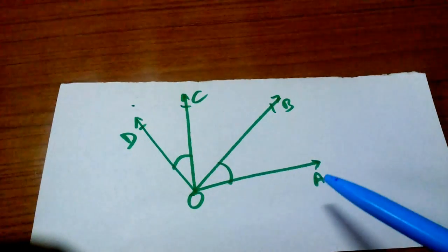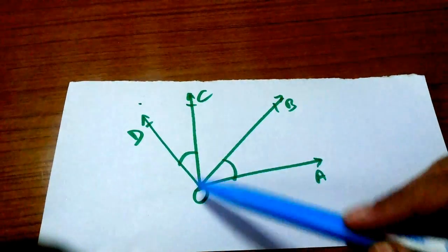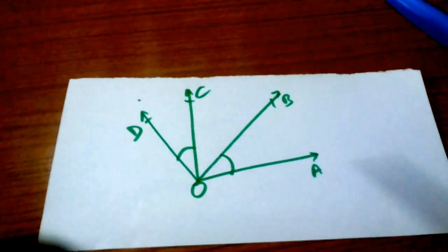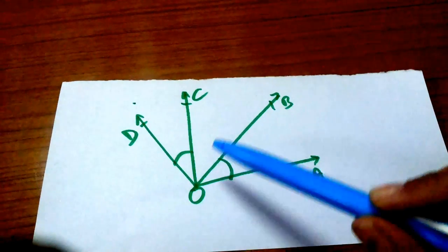In this diagram, angle AOB and angle COD are not adjacent to each other as they have same vertex but they do not share a common arm.